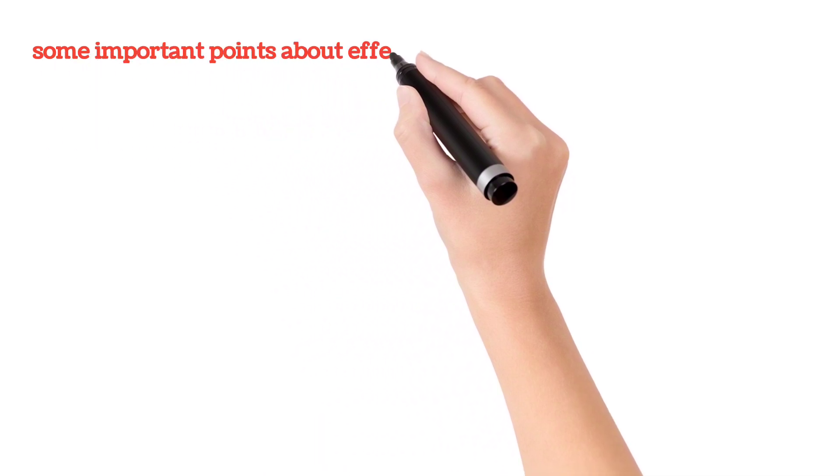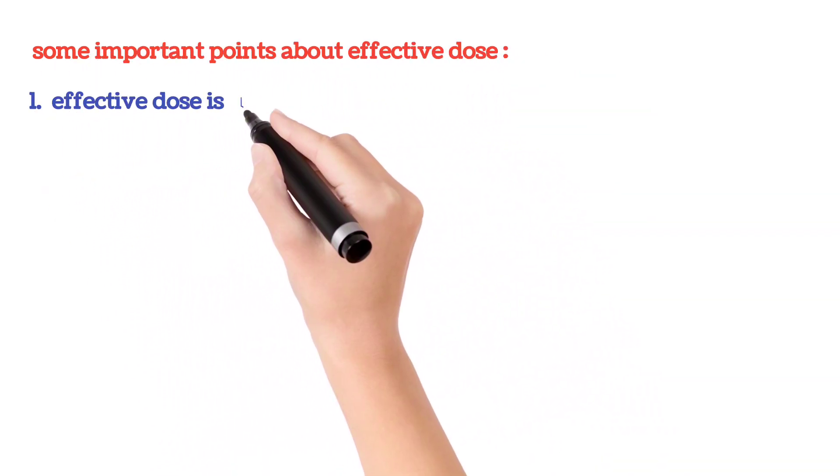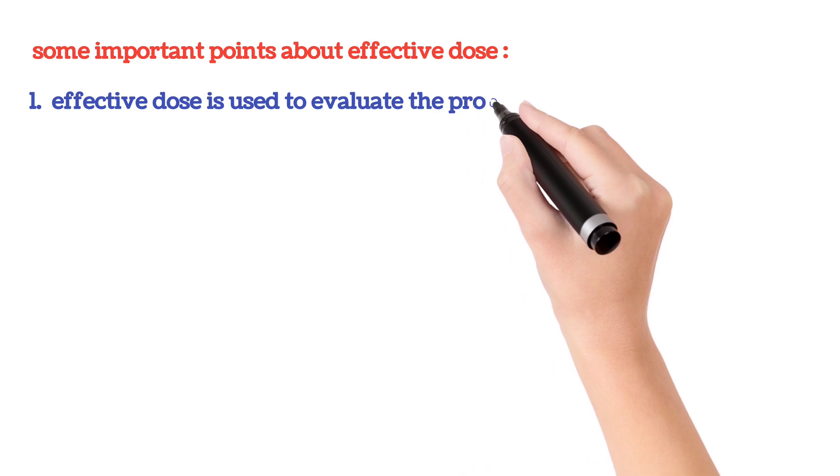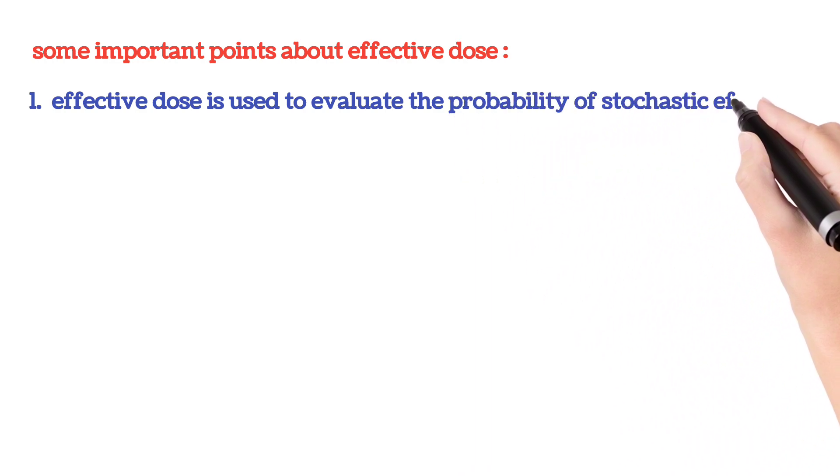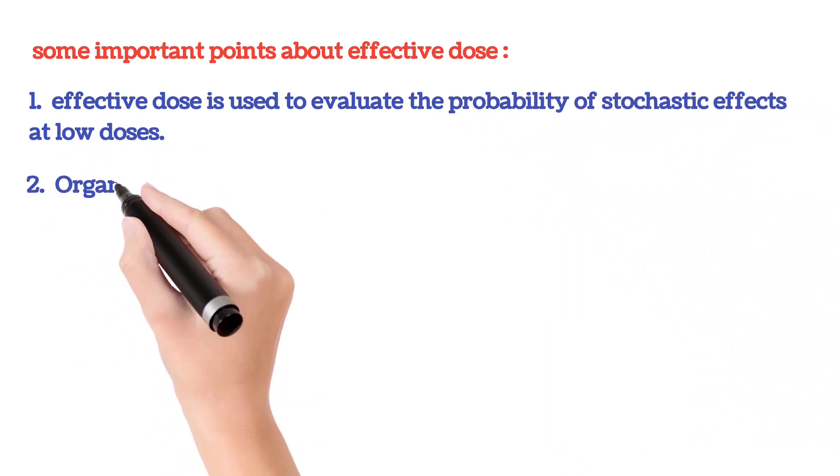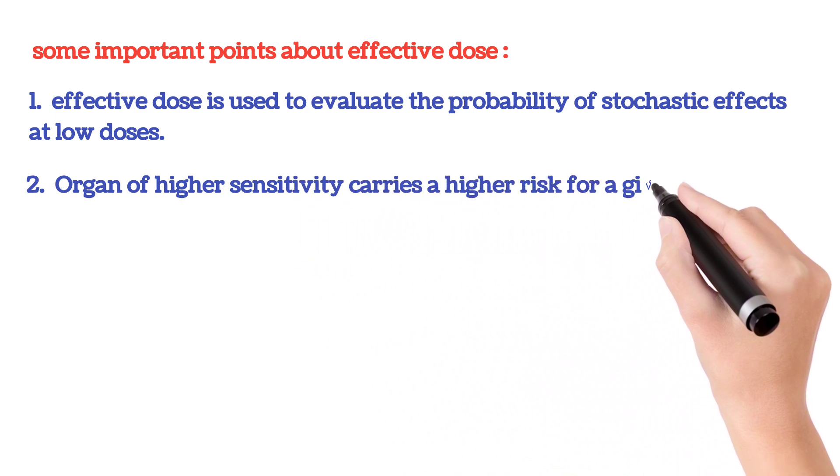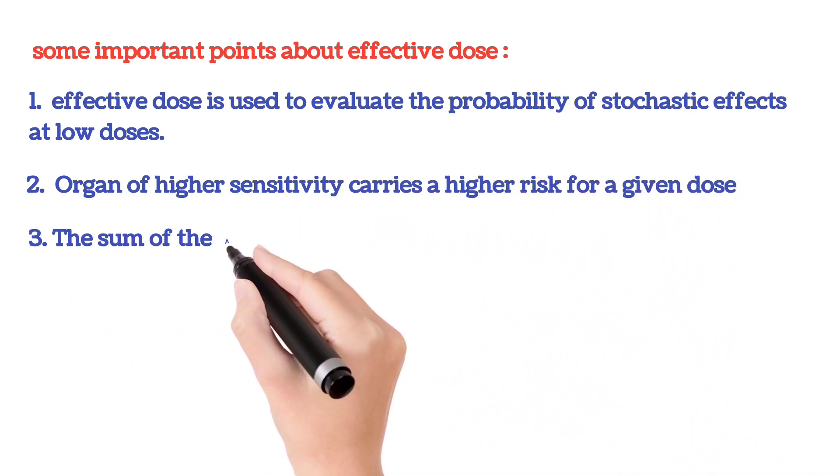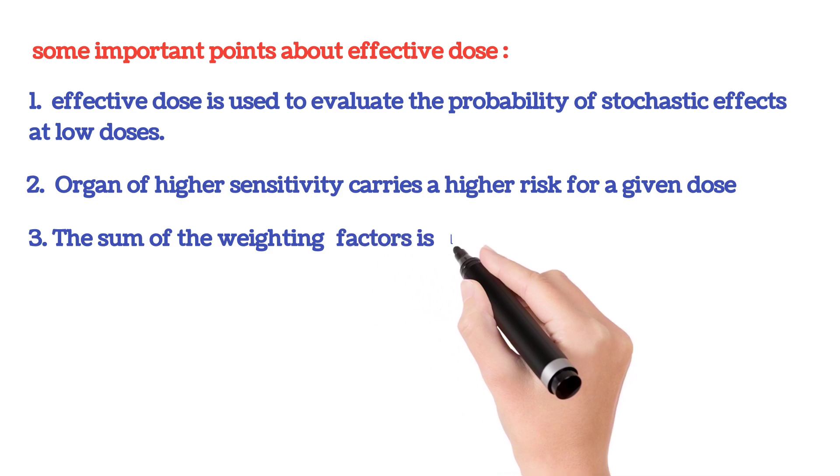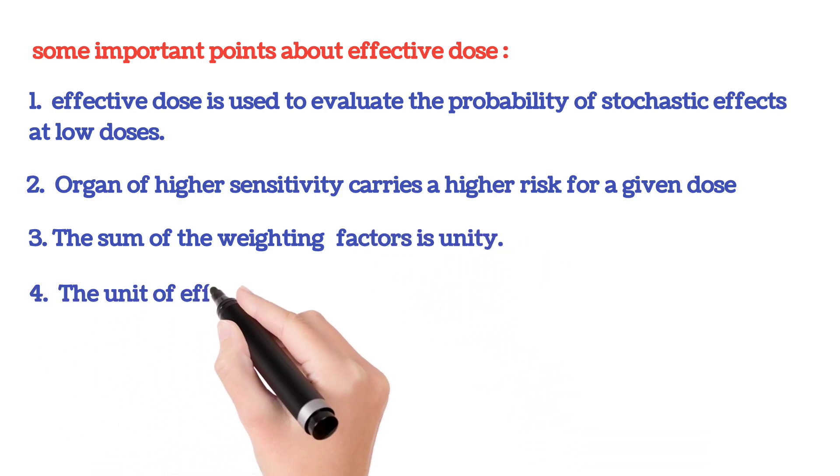Some important points about effective dose: Effective dose is used to evaluate the probability of stochastic effects at low doses. Organs of higher sensitivity carry a higher risk for a given dose. The sum of the weighting factors is unity. The unit of effective dose is sievert.